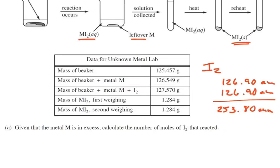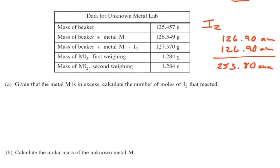So given that the metal M is in excess, calculate the number of moles of I2 that are reacted. Here's our data table, and we're looking for the iodine. We can see that this step here, we have the beaker plus the metal, and then here's the beaker plus the metal plus the iodine. So if we subtract those two numbers, we should be able to get the mass of the iodine.